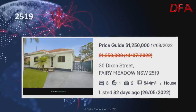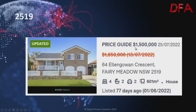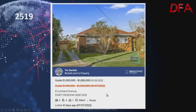Now Fairy Meadow, postcode 2519. A three-bedroom, one-bathroom house on 544 square metres, listed 82 days ago — was $1.35 million on the 14th of July, dropped to $1.25 million on the 17th of August. Another in the same area: four bedrooms, two bathrooms on 601 squares, listed 77 days ago — was $1.65 million on the 13th of July, now $1.5 million on the 25th of July. A third: four bedrooms, two bathrooms on 556 square metres, listed 41 days ago — guide was $1.2 million on the 15th of July, now $1.08 million as at the 5th of August.